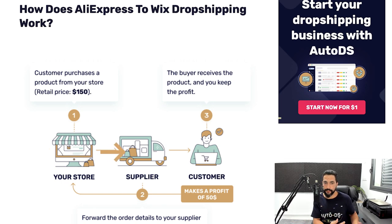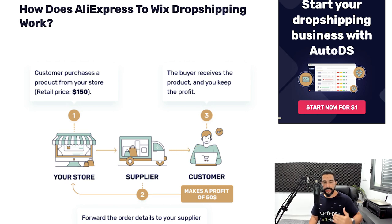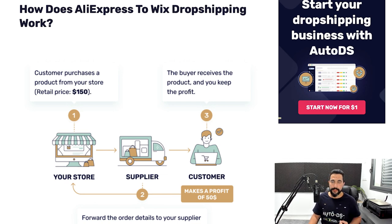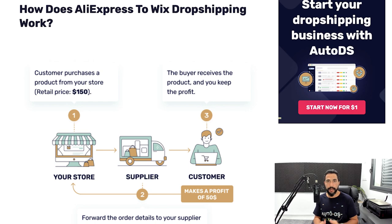So you have your Wix store, your AliExpress supplier, and then the customer. What happens first is the customer makes an order on your store for a product you listed from AliExpress. As the drop shipper, you then go to AliExpress, purchase that product, and ship it directly to the customer's address — without ever seeing the product yourself. That is the drop shipping business model, and it's only growing every year.